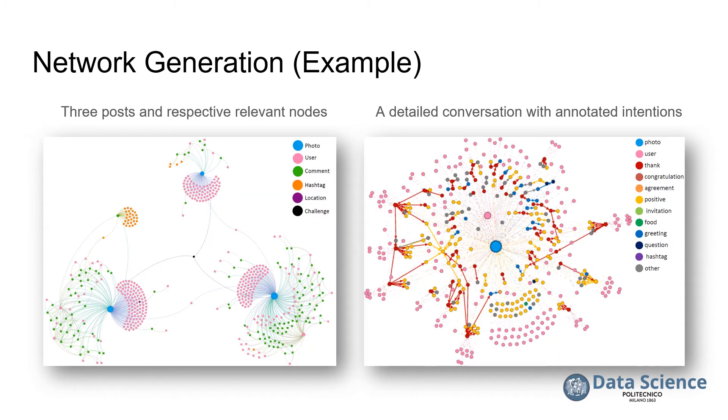The figure on the left visualizes three posts, shown as the blue centers of the clusters, and associated relevant nodes that are users, comments, hashtags, location, and so on. The figure on the right shows the results of the intent analysis over the conversation about a specific photo. A reply edge connects one comment to one or more comments. These relationships portray the opinion exchange between the users.